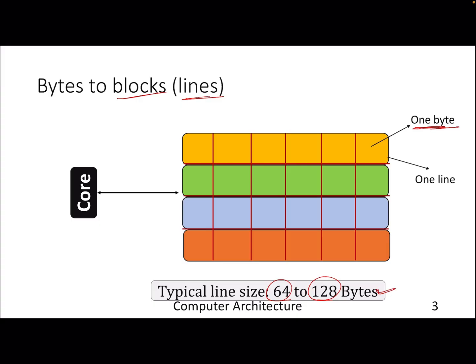If you are dealing with an integer array and each array index is 4 bytes, storing 64 bytes means you are storing 16 array indices in one line. It's just exploiting spatial locality with the hunch that because I am accessing A[0], I might access A[1] also — so let's bring it from the DRAM into the cache.